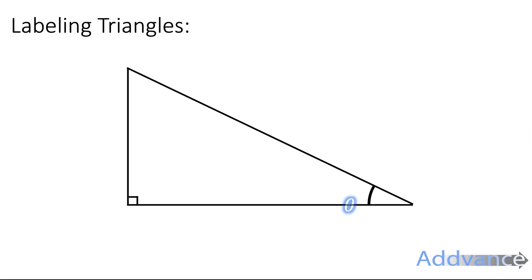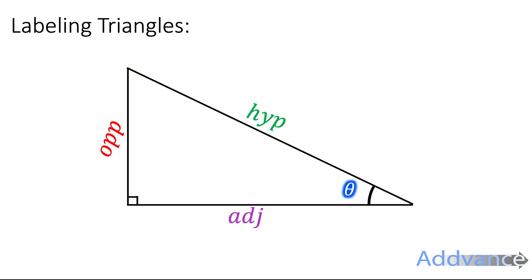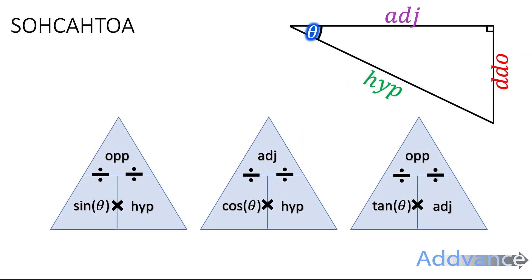So if you know anything about SOHCAHTOA already — and you should have watched my previous video on SOHCAHTOA — you know the right angle triangle is labeled like this. You've got the angle you're interested in and the right angle. Opposite the angle you're interested in is the opposite. Next to the right angle and the angle is the adjacent, and the longest side opposite the right angle is called the hypotenuse.